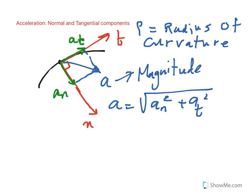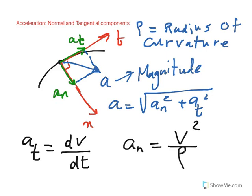The tangential component of acceleration, a_t, is simply the rate of change of speed — it results from the magnitude of the velocity changing. The normal component of acceleration, a_n, equals v² divided by the radius of curvature rho. This normal component is due to the change in the direction of the velocity. As a particle moves along a curved path, its velocity direction must remain tangent to the path, so as long as the direction is changing, there is a normal acceleration.